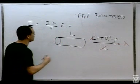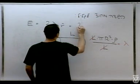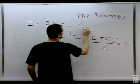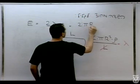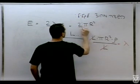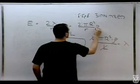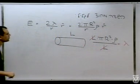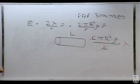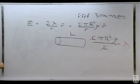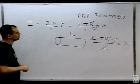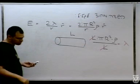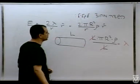ועכשיו אפשר פשוט להציב: שני פאי R בריבוע רו חלקי R בכיוון רדיאלי. אז זה השדה שמחוץ לגליל. אפשר להגיע לזה גם מחוק גאוס ישירות, וזה מה שנעשה עכשיו בשביל השדה בתוך הגליל. (Now substitute: E_outside = 2πR²ρ/R in the radial direction. That is the field outside the cylinder. We can also derive it from Gauss's law directly, which is what we'll do now for the field inside the cylinder.)